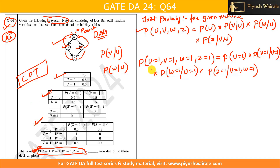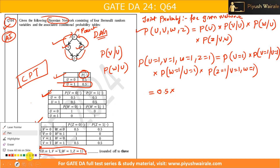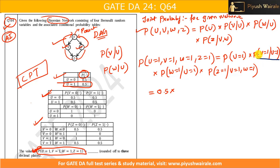Now we get the values from the CPT tables. The probability P(U=1) is 0.5. The probability P(V=1 | U=1) is also 0.5.